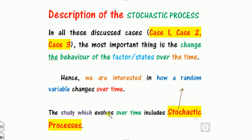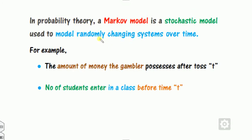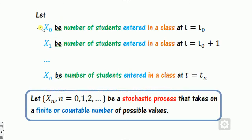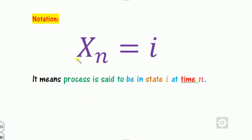A stochastic process involves a random variable that changes over time. In the probability theory, the Markov model is a stochastic process that randomly changes over time. For example, the number of students entering a classroom before time t is a stochastic process — let X₀ be the number of students at time t₀ and Xₙ be the number at time tₙ. These are changing over time, they are not constant, so {X₀, X₁, ..., Xₙ} is a stochastic process.